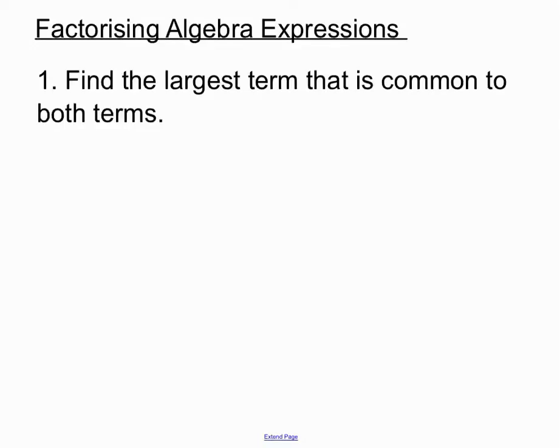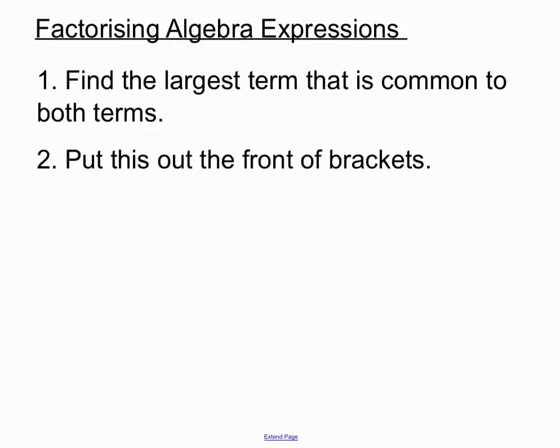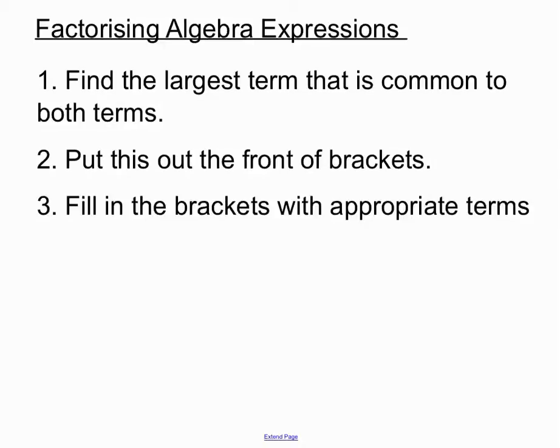To factorise, what we do is we create some brackets. We've got to find the largest term that is common to both of the terms in the question. We put that largest term out the front of some brackets, and then we fill in the brackets with appropriate terms. That doesn't make much sense at this stage, but we'll see some examples and see how that works out.